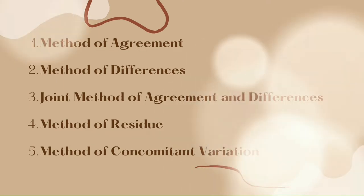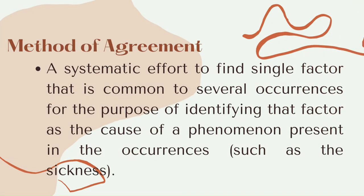The Method of Agreement talks about the systematic effort to find a single factor that is common to several occurrences, for the purpose of identifying that factor as the cause of a phenomenon. In all cases where an effect occurs, there is a single prior factor X that is common to all those cases, wherein X is the cause of the effect.